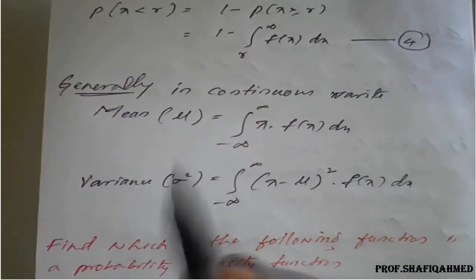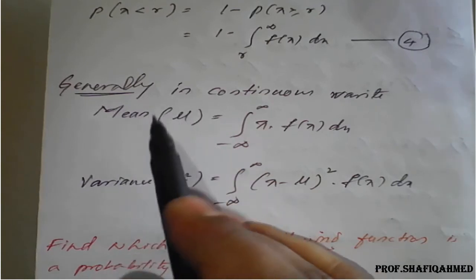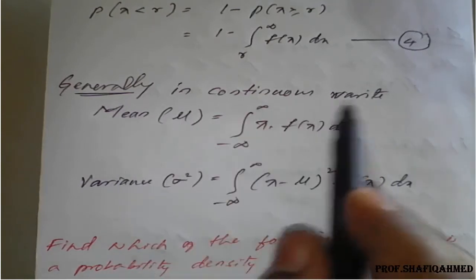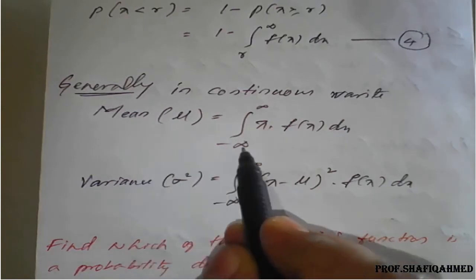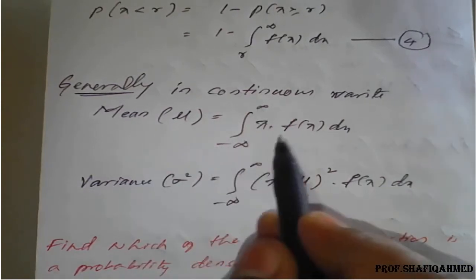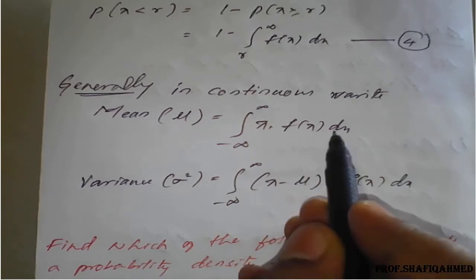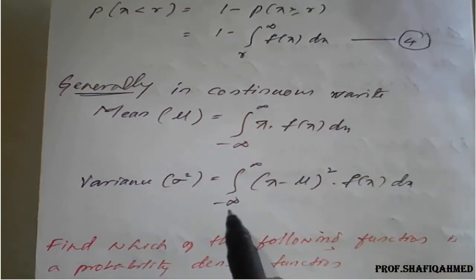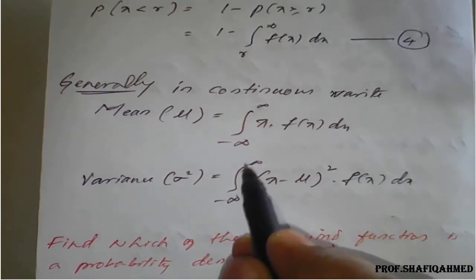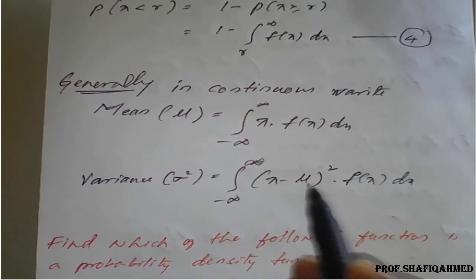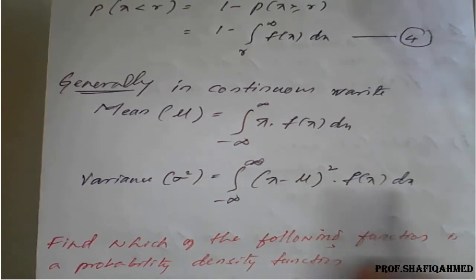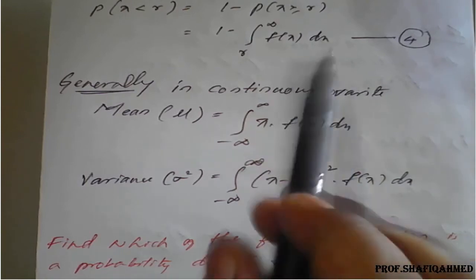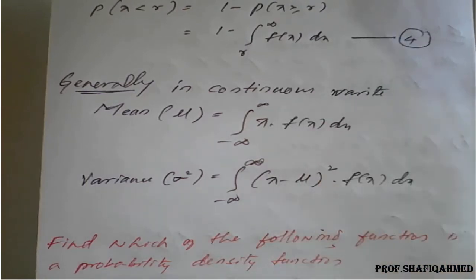To find the mean and variance in continuous variate, we have formulas. Mean is given by the integral from minus infinity to plus infinity of x·f(x) dx. Variance is given by the integral from minus infinity to plus infinity of (x − μ)² · f(x) dx. Using these two results along with results 3 and 4, we can solve the examples.